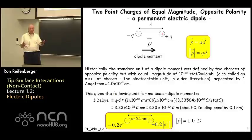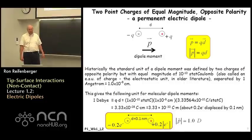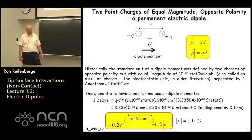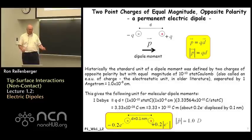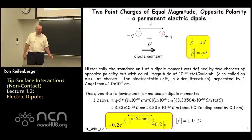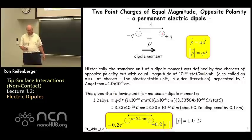We need a system of units to measure dipole moments, and the system that has been developed historically is referred to as the Debye. The Debye unit of dipoles has its origins in old systems of units. Basically, a molecule with a dipole moment of one Debye has about two tenths of an electron charge separated from another by about a tenth of a nanometer. If you do that calculation you'll find that one Debye is about 3.3 × 10⁻³⁰ coulomb·meters, which is the unit we'll use throughout this set of lectures.